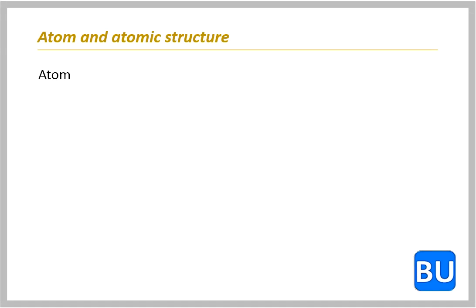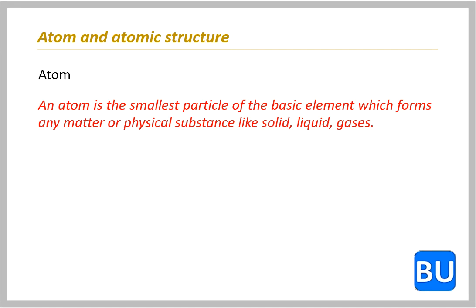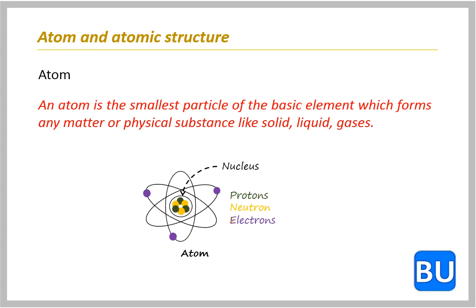Atom and Atomic Structure. An atom is the smallest particle of the basic element which forms any matter or physical substance like solid, liquid, gases. An atom is a combination of three particles, namely protons, neutrons and electrons.